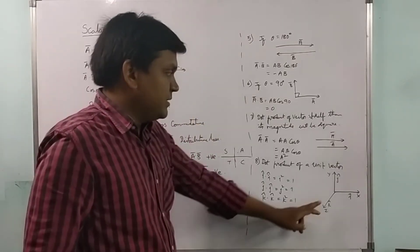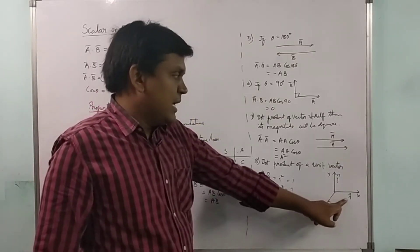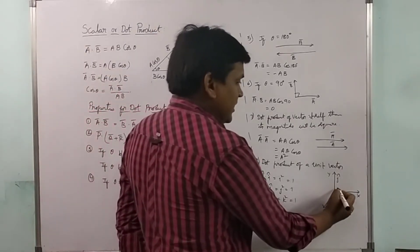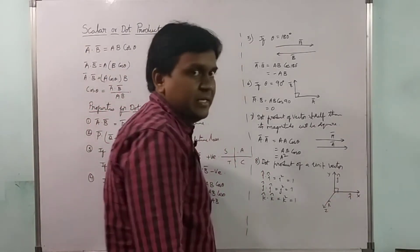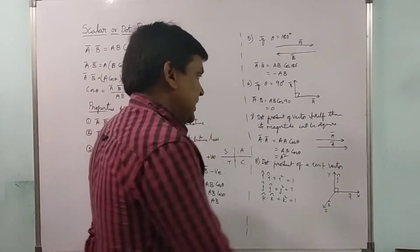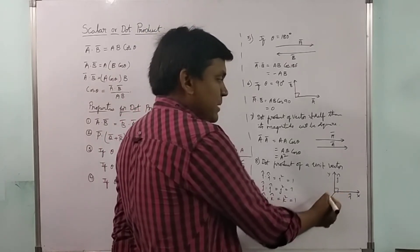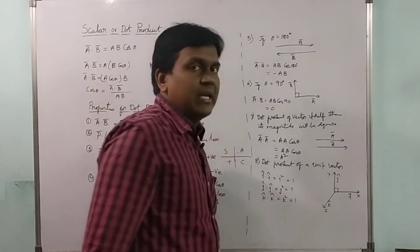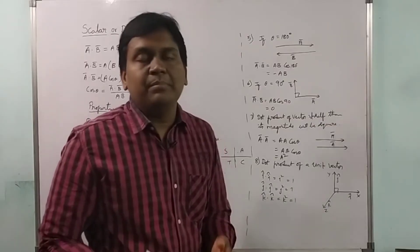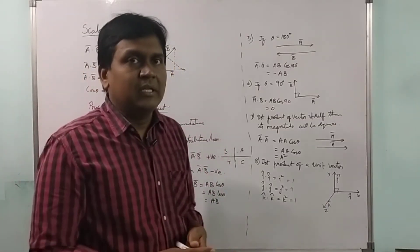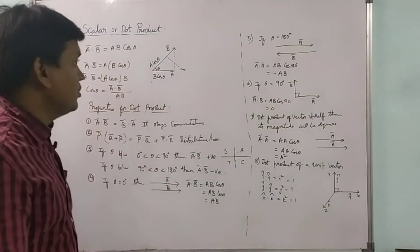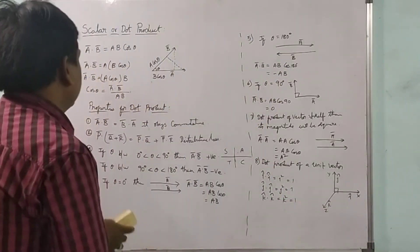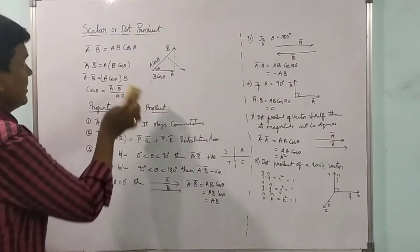The angle between i-cap and j-cap is 90 degrees, the angle between j-cap and k-cap is 90 degrees, and the angle between k-cap and i-cap is also 90 degrees. That means these unit vectors are mutually perpendicular to each other.